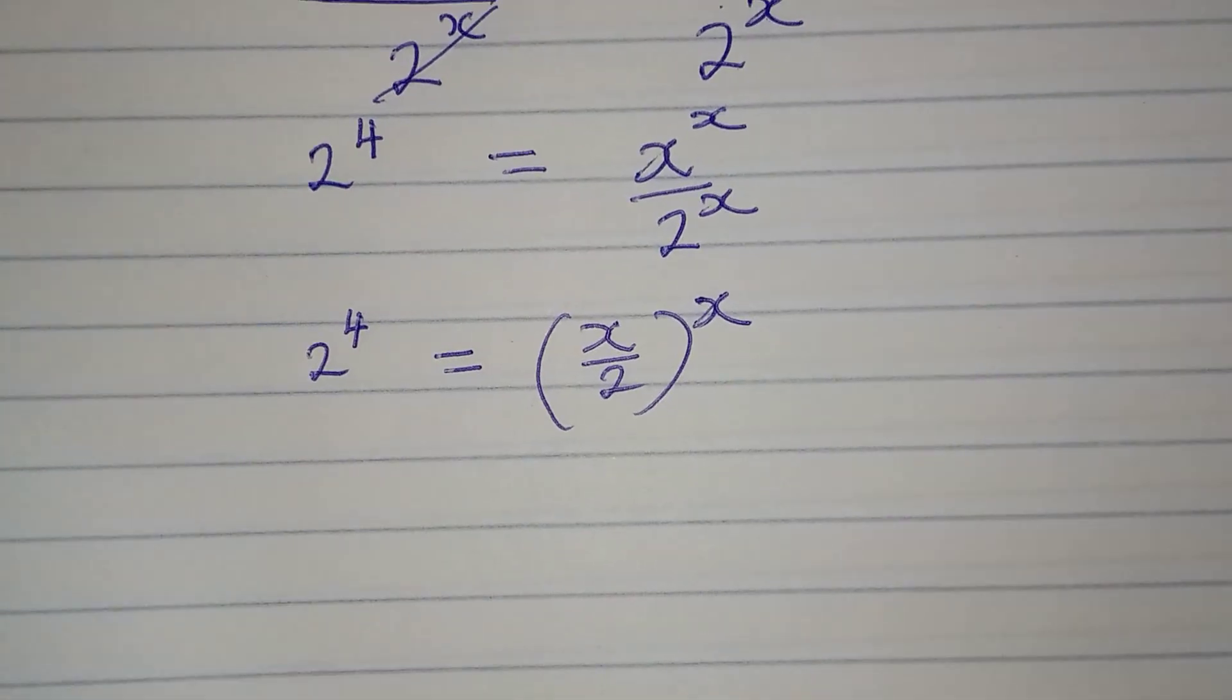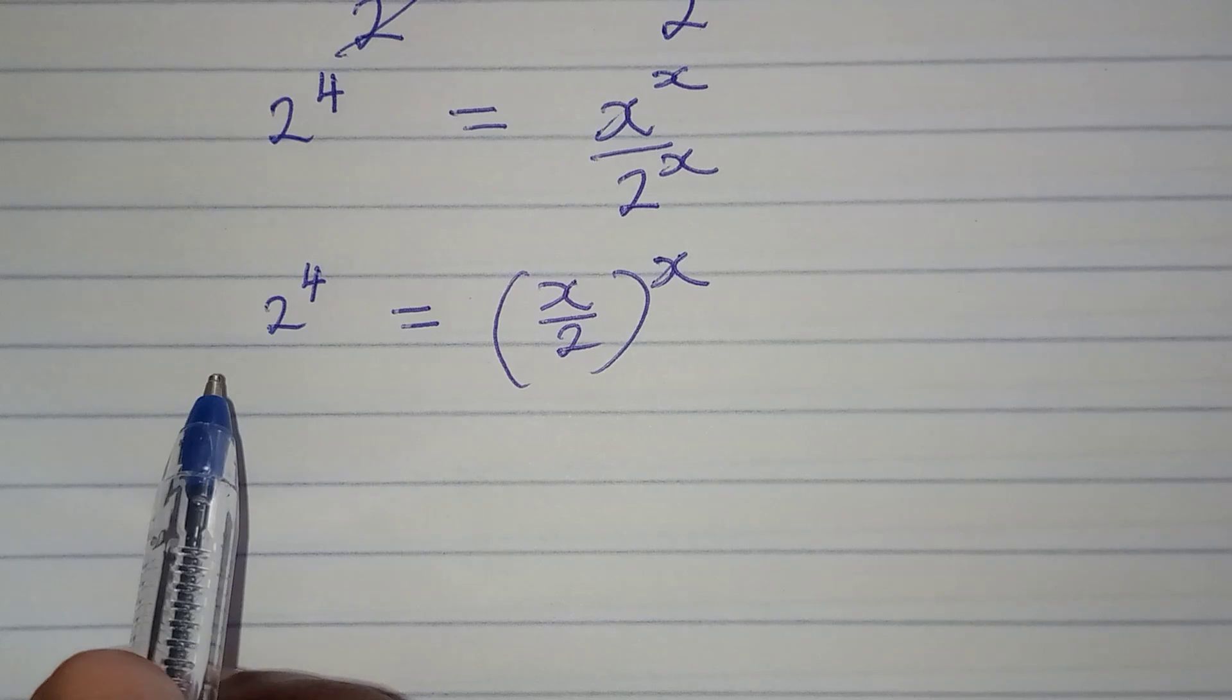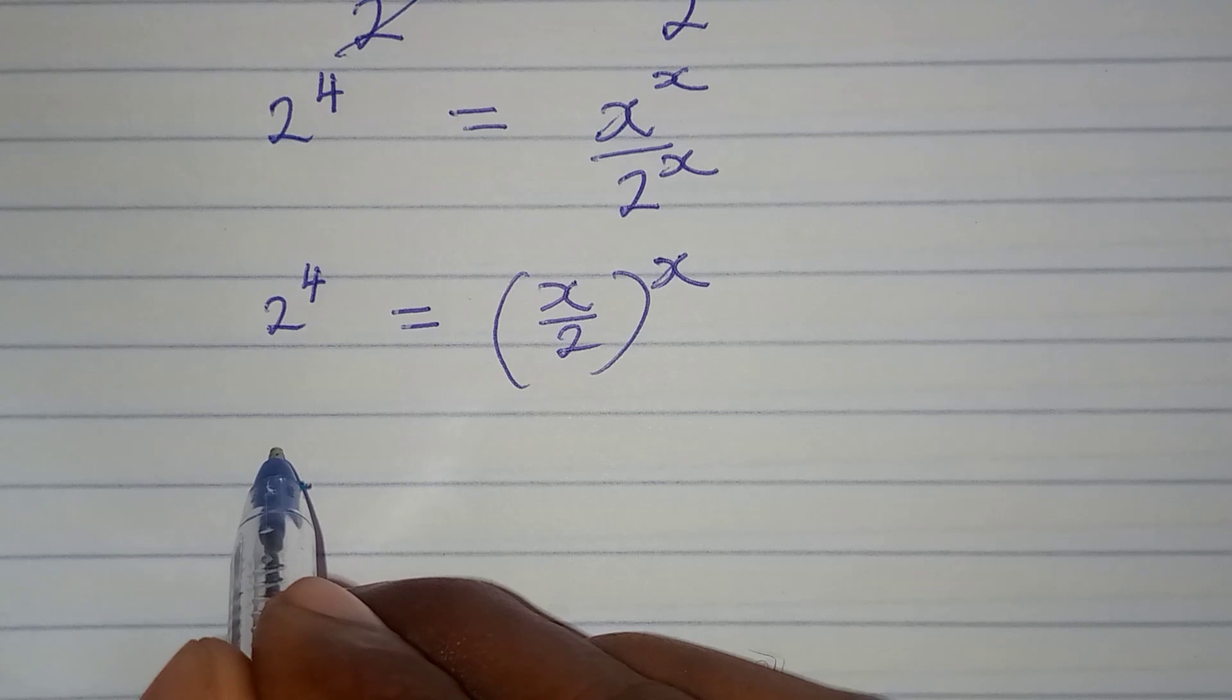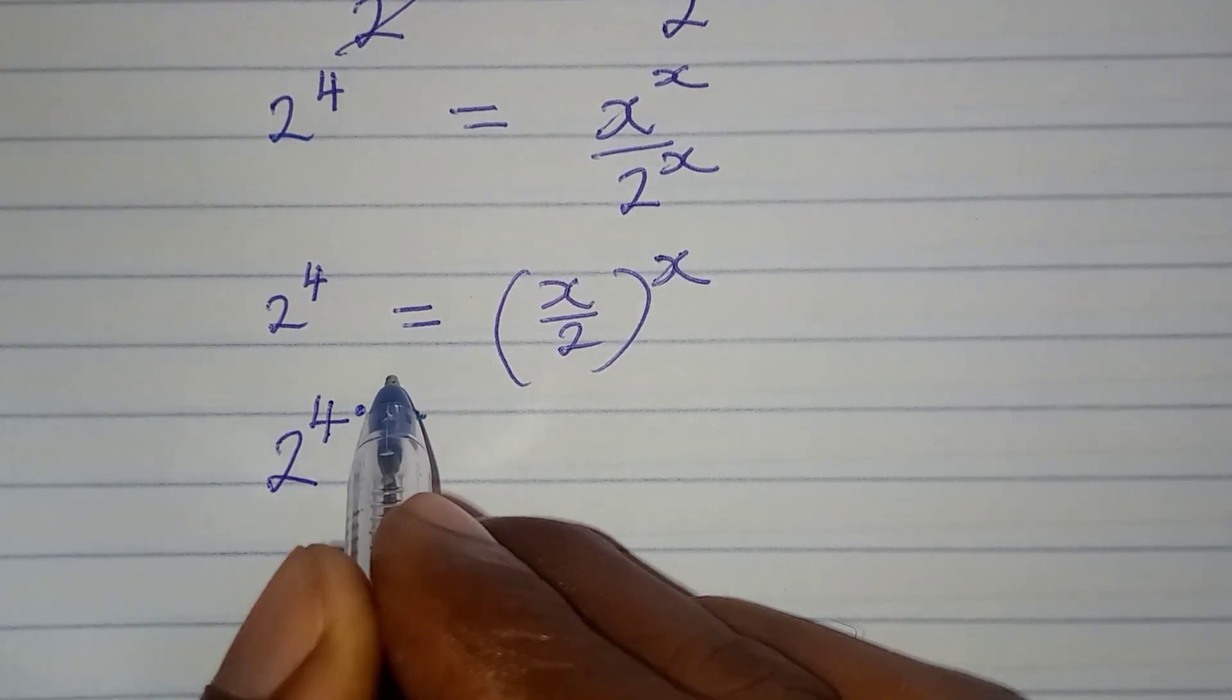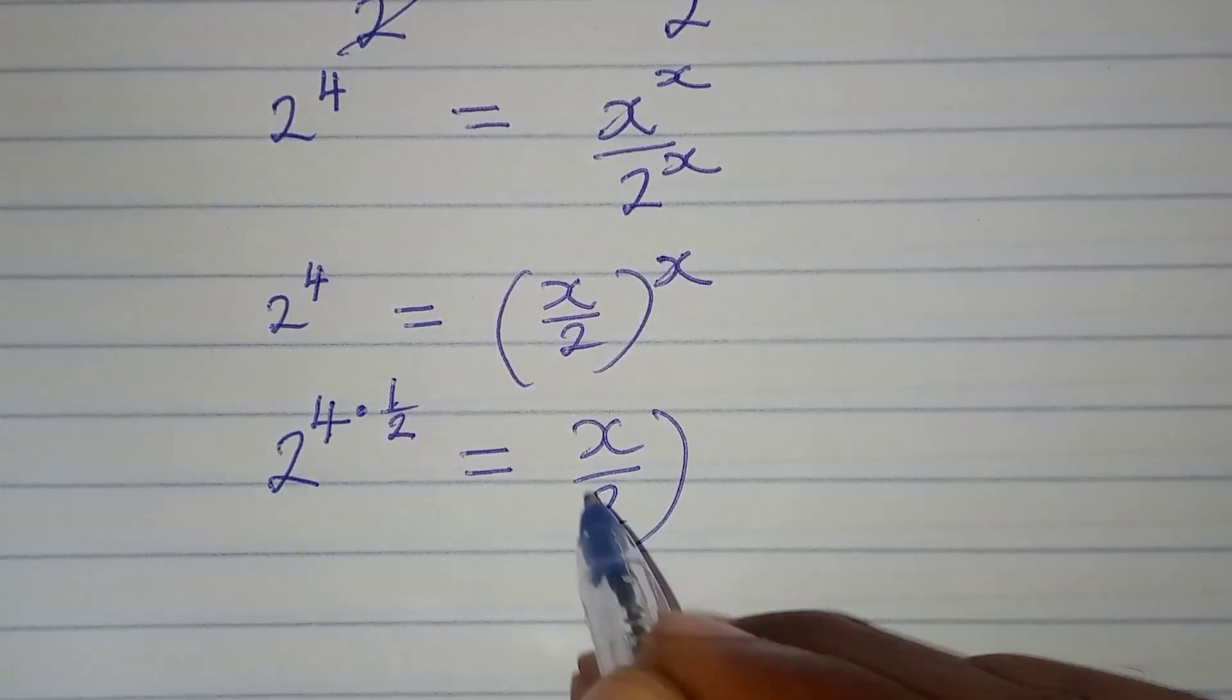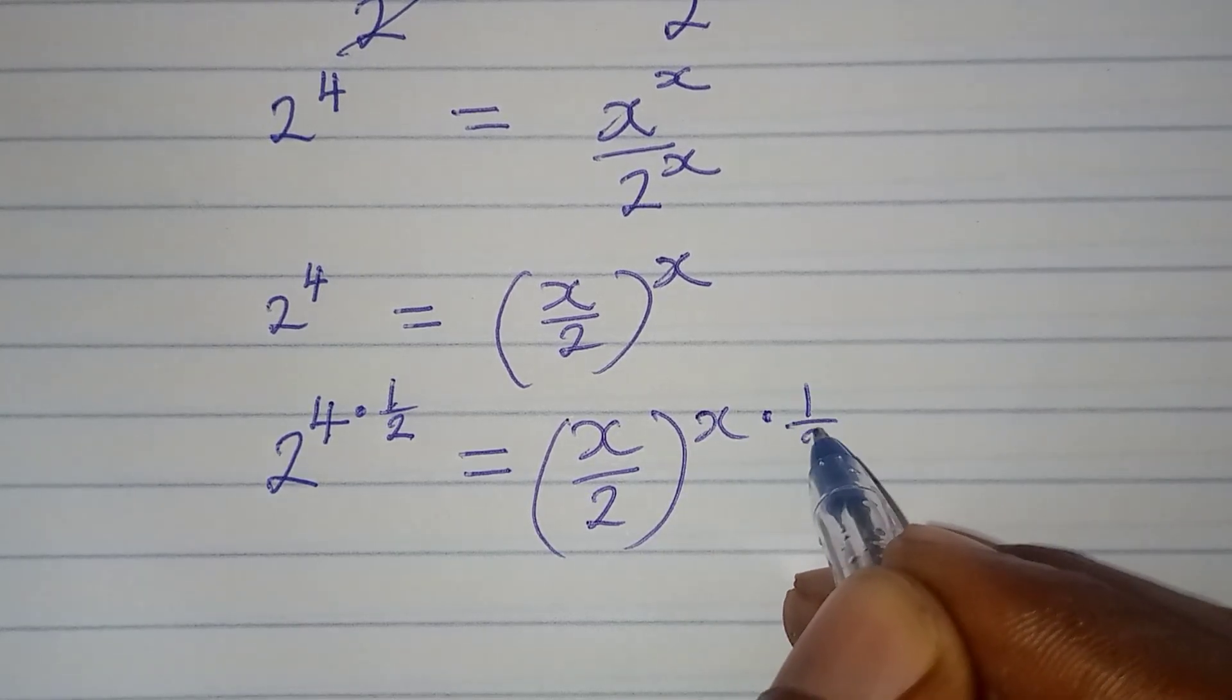Now, the next thing I'm going to do at this point: I'm going to multiply the left hand side by 1 over 2. I mean, multiplying the power. So I have 2 to the power of 4 multiplied by 1 over 2. Remember, what you do on one side you have to do it on the other side. We have x here multiplied by 1 over 2.